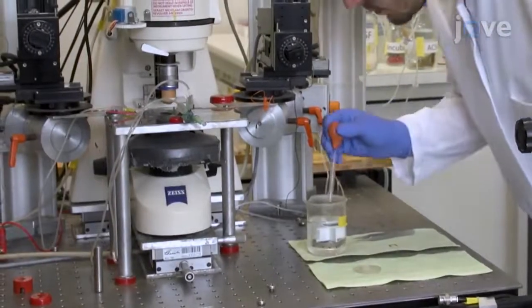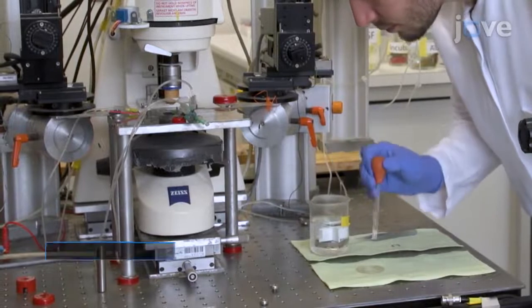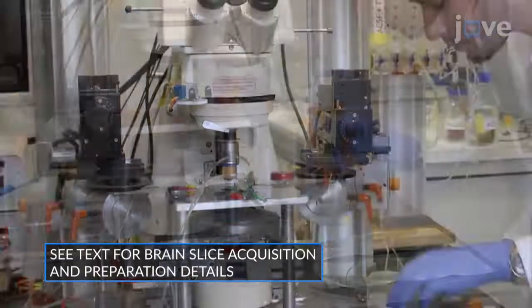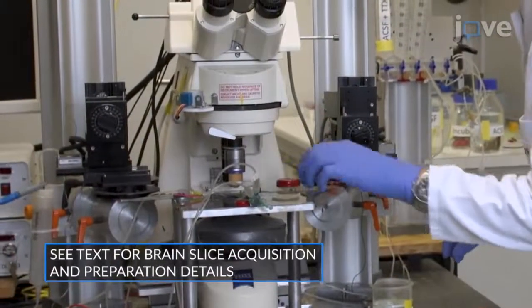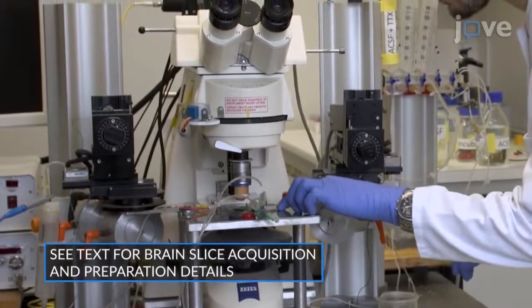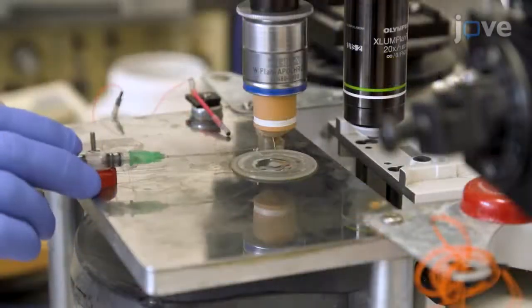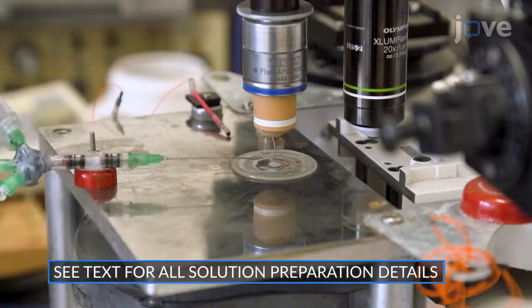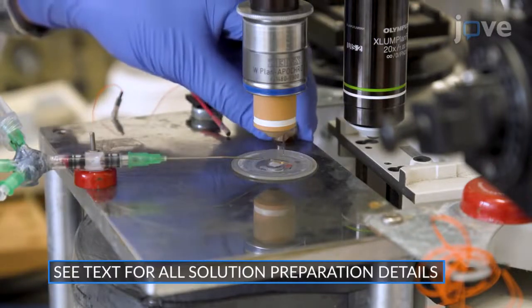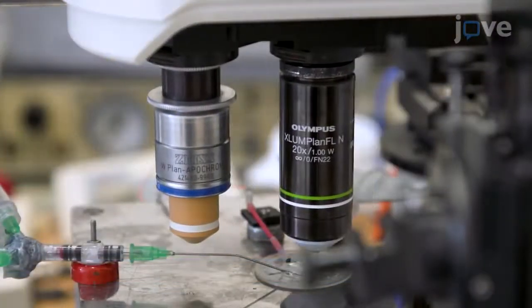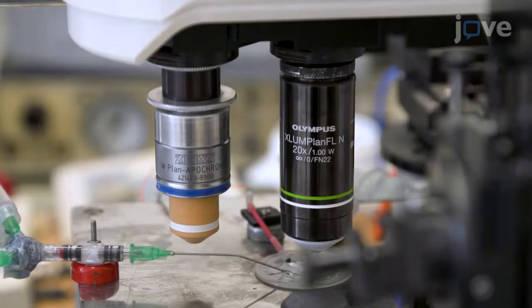For autofluorescence correction, first place a brain slice from the mouse of interest into the recording chamber of a one-photon microscope. Submerge the slice in oxygenized artificial cerebrospinal fluid and use the 20x water immersion objective to locate the dorsal striatum.